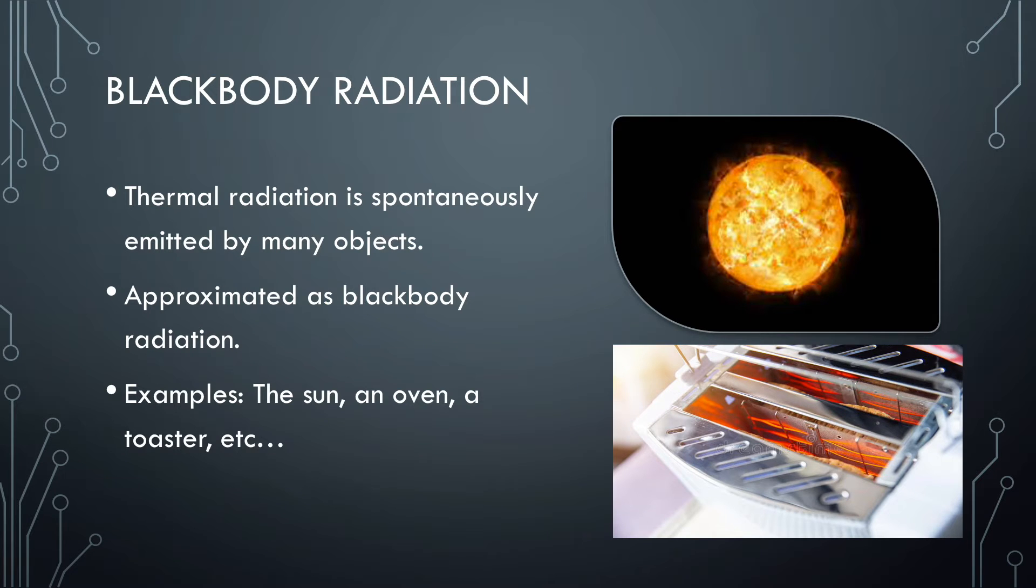Continuing on the topic of black body radiation, the thermal radiation spontaneously emitted by many objects can be approximated as black body radiation. Some examples of black bodies and black body radiation are objects like the sun and some stars, an oven, and the element of a toaster.